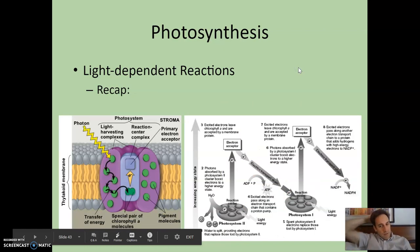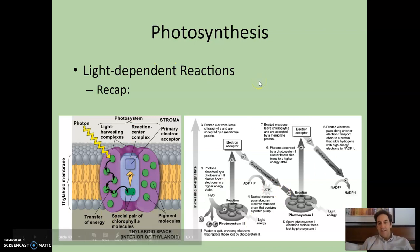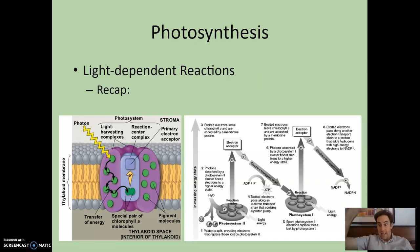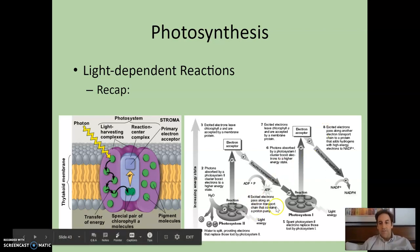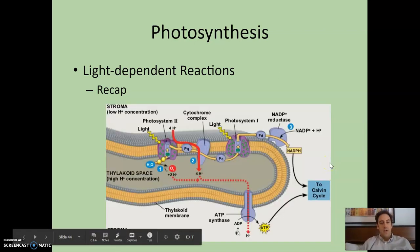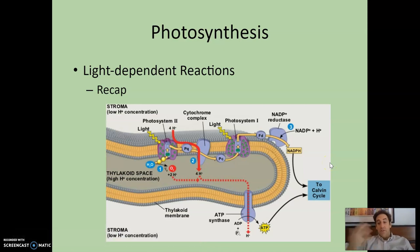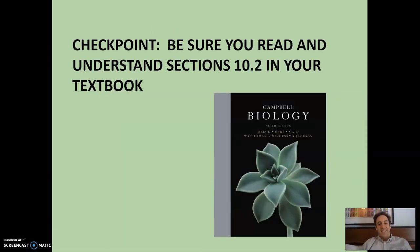So there's a recap — you can look at it with either diagram. That is the light-dependent stage. We have successfully captured light energy and used it to make the chemical energy of ATP and NADPH. In our next screencast, we're going to take that chemical energy — ATP and NADPH — and use it to make sugars.